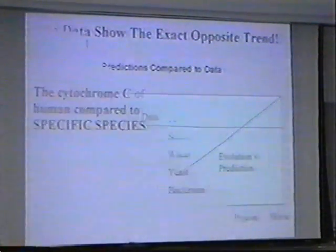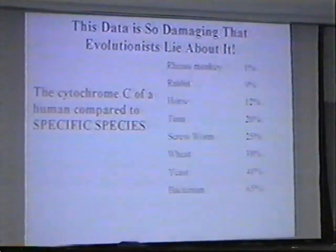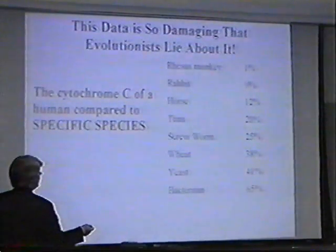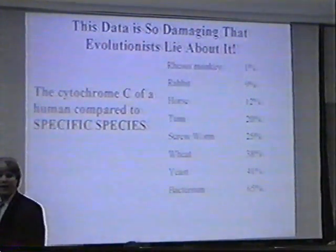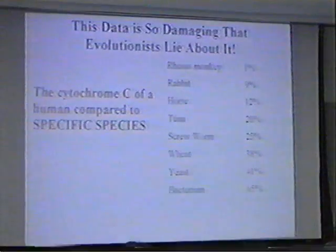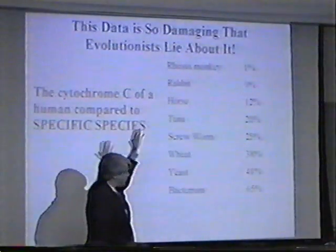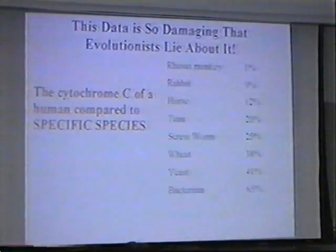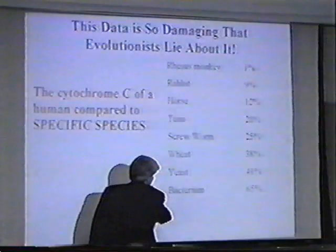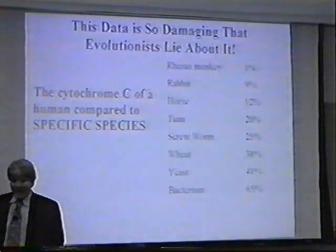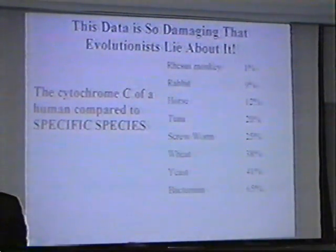So what's an evolutionist to do? Well, the best thing to do is simply lie. All you have to do is put amino acid and cytochrome C in a search engine and you'll find all sorts of professors' websites that give this particular sequence, where they're taking a human cytochrome C and comparing it to that of a monkey, a rabbit, a horse, a tuna, a screwworm, a yeast, a wheat, and a bacterium — where percentages mean percent difference. In this particular sequence, we do see exactly what evolutionists predict.